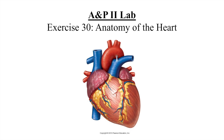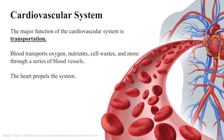This week in lab we'll be doing Exercise 30, The Anatomy of the Heart. The major function of the cardiovascular system is transportation. Using blood as the transport vehicle, the system carries oxygen, nutrients, cell wastes, electrolytes, and many other substances to and from the body cells. The system's propulsive force is the contracting heart, which can be compared to a muscular pump.